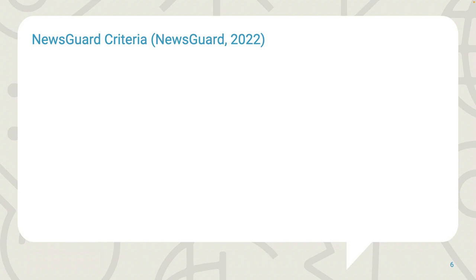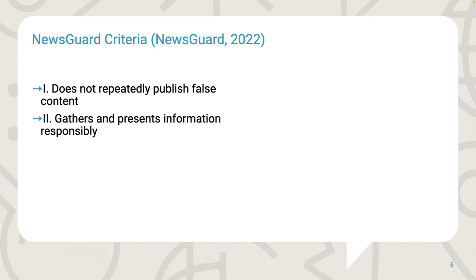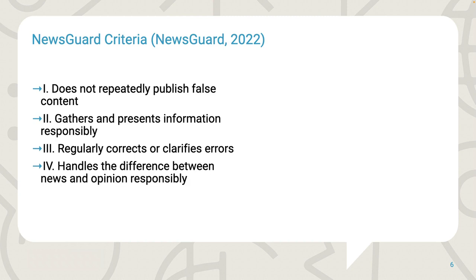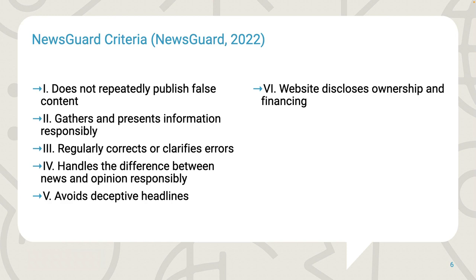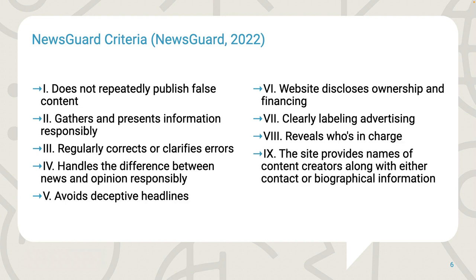Another important example of reliability criteria are the NewsGuard criteria. NewsGuard is a rating system for news and information websites accessible via browser extensions and mobile apps. The NewsGuard criteria include: 1. Does not repeatedly publish false content. 2. Gathers and presents information responsibly. 3. Regularly corrects or clarifies errors. 4. Handles the difference between news and opinion responsibly. 5. Avoids deceptive headlines. 6. Website discloses ownership and financing. 7. Clearly labels advertising. 8. Reveals who's in charge. 9. The site provides names of content creators along with either contact or biographical information.